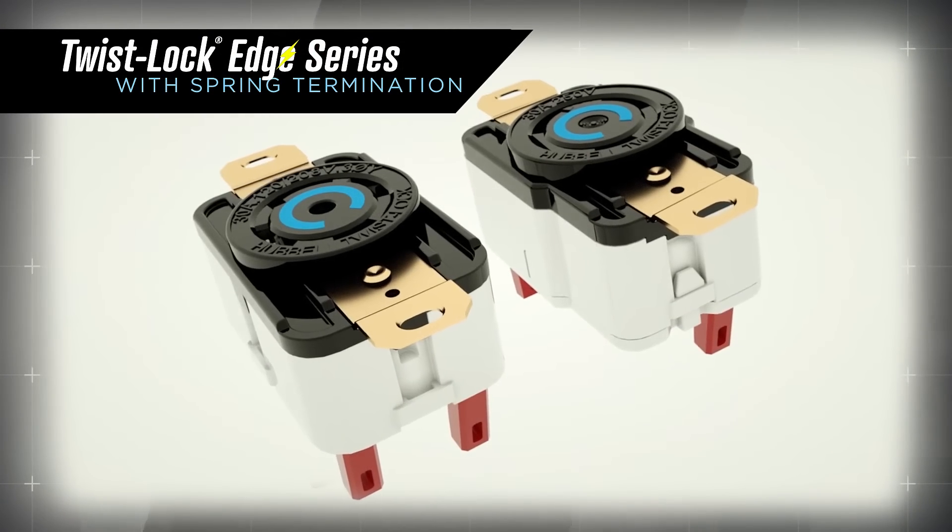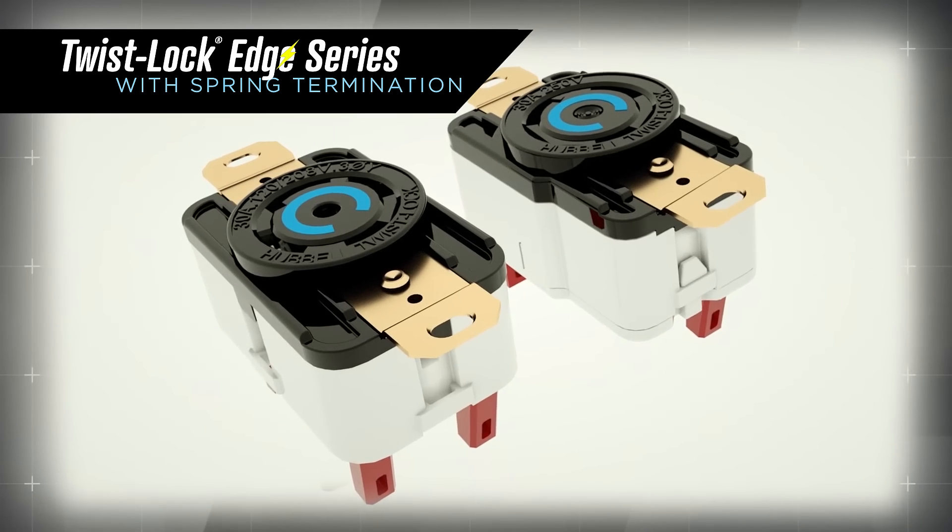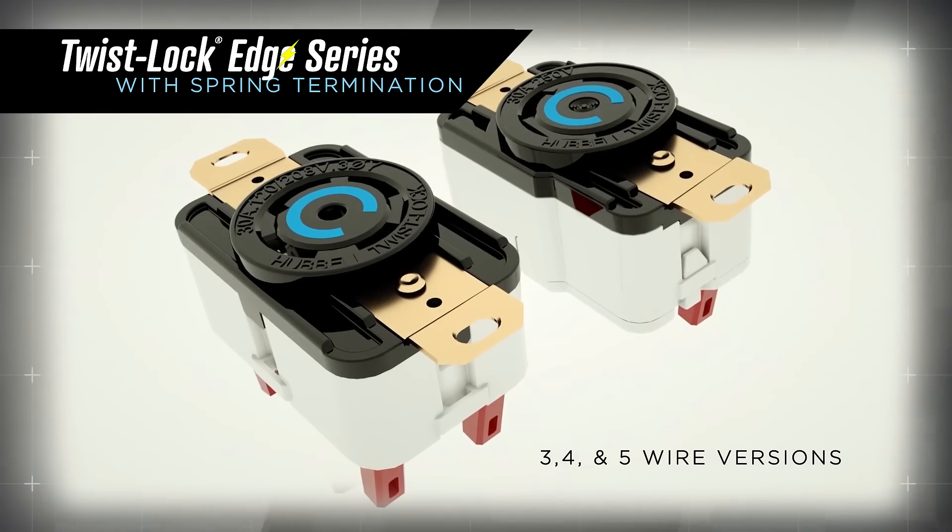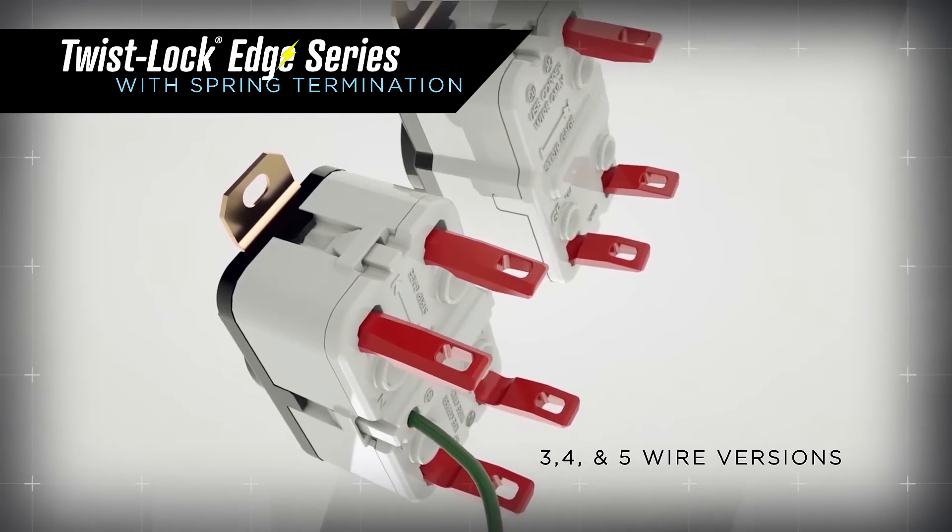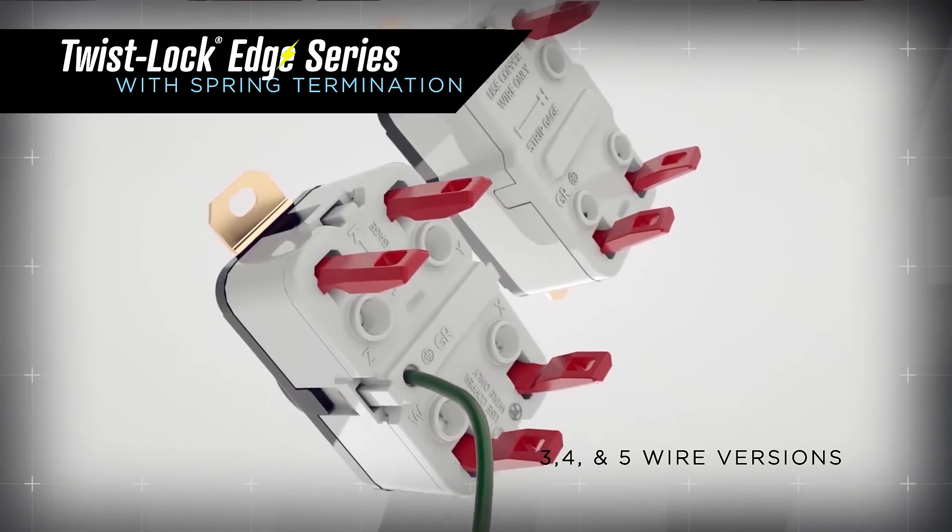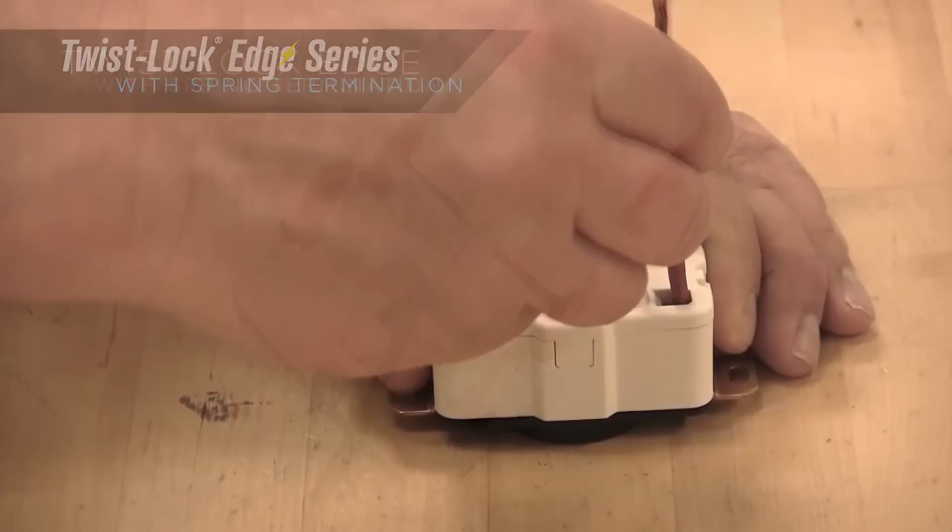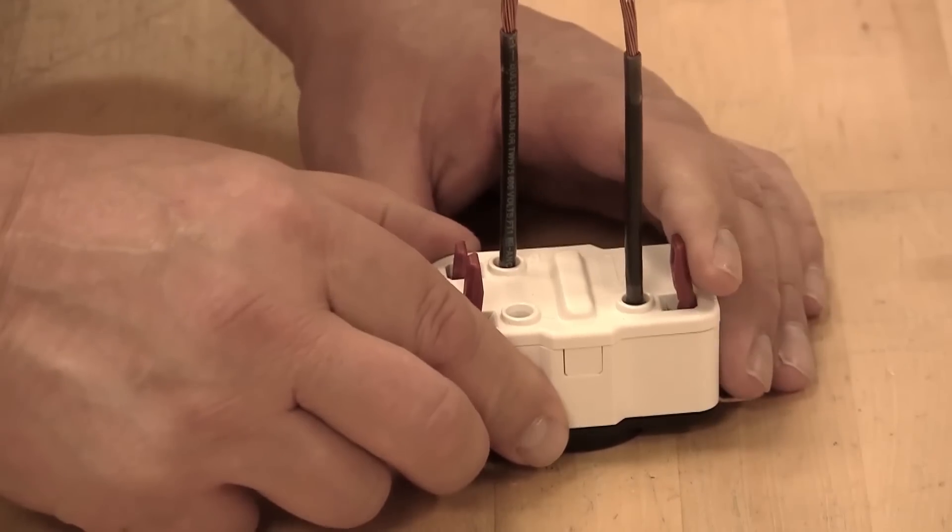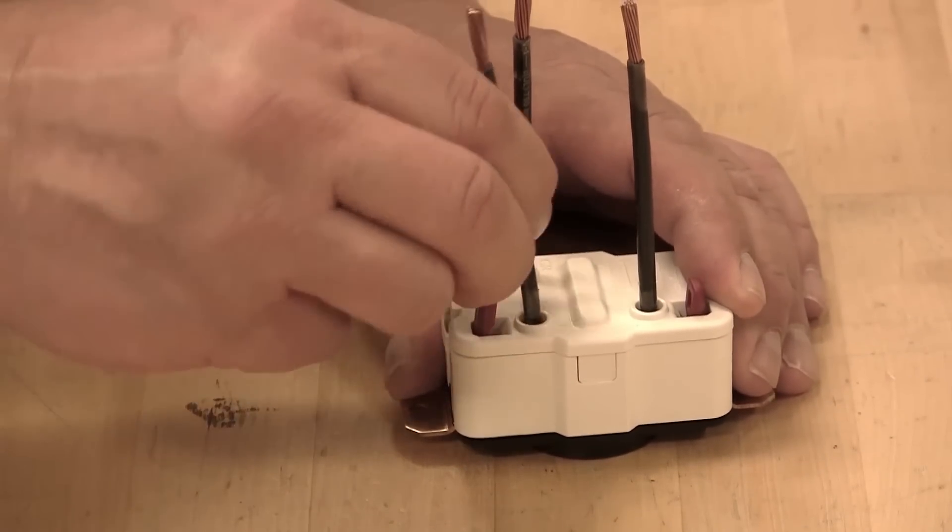The complete line of Hubble Twistlock Edge Spring Termination Locking Receptacles will be available in three, four, and five wire versions, with the latter featuring a pre-installed ground wire. No matter what version meets the needs of the job, you will be installing receptacles faster and easier than ever before.